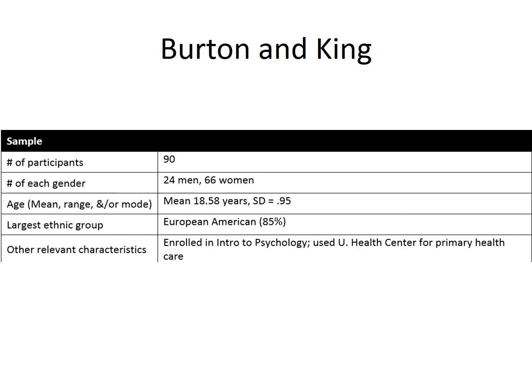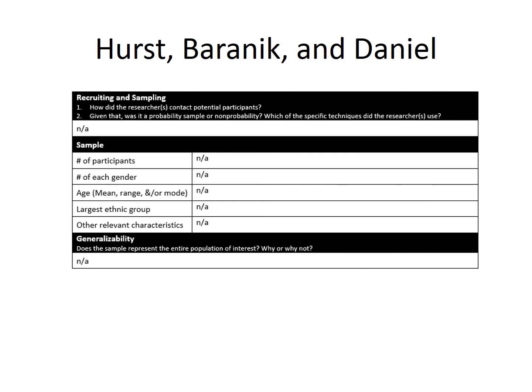In this case, the note about using the health center as the primary source of health care is the other relevant characteristic. They needed that because of the way they operationalized one of their variables. The notes about the sample characteristics also contribute to our understanding of the results. This section of the worksheet doesn't add to our understanding of the Hearst article, though, since it was a content analysis.